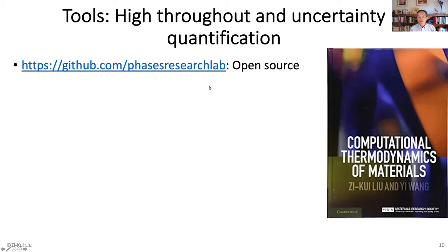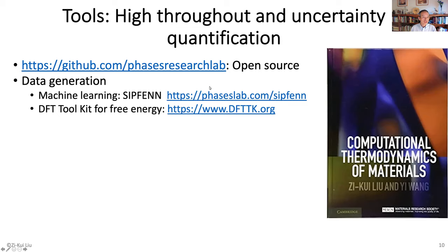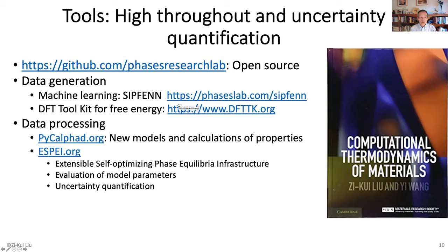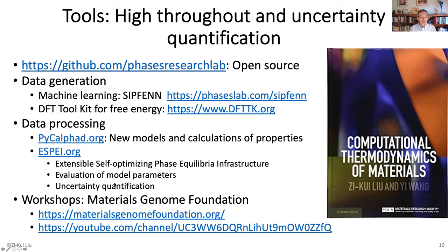If you go to GitHub under our group's page, you can see most of our tools available there. Our tools fall into two or three categories. First is data generation — you can do experiments, DFT calculations, or machine learning. We have machine learning tools and DFT tools. To promote the tools and their use, we formed a nonprofit organization, the MetaGino Foundation, which gives workshops at MetaGino Foundation dot org, and also has YouTube workshop recordings.